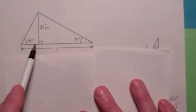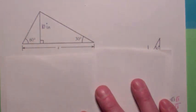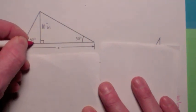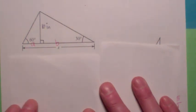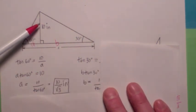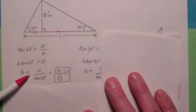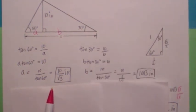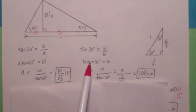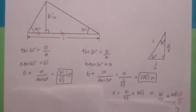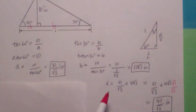On this one, you're given this triangle where this angle is 60 and this angle is 30, and you want to find x. Sometimes you have to introduce new variables. Let's call this distance a and this distance b, so a plus b equals x. The tangent of 60 equals 10 over a, so you solve for a and get a equals 10 over the square root of 3. The tangent of 30 equals 10 over b, so b equals 10 times the square root of 3. You add those together and x equals a plus b equals 40 over the square root of 3 inches.